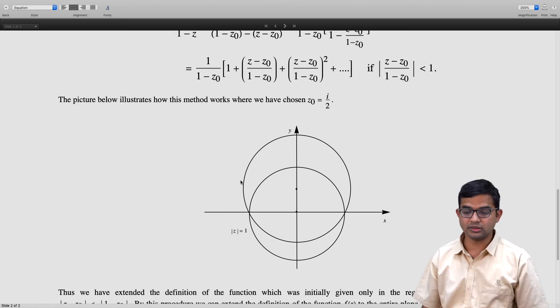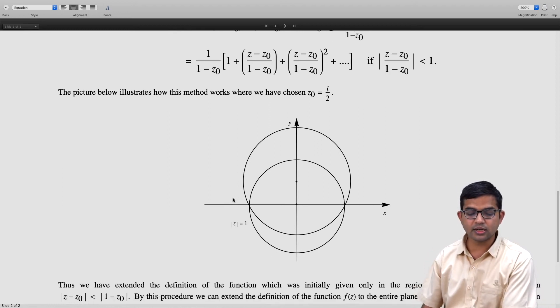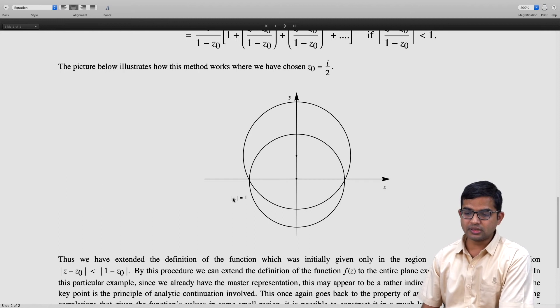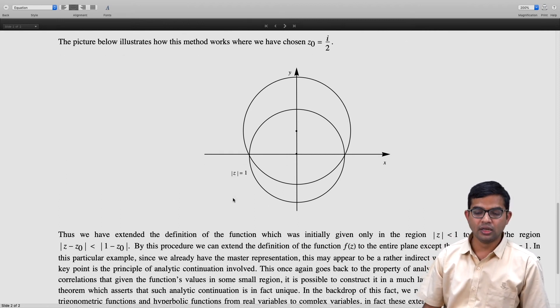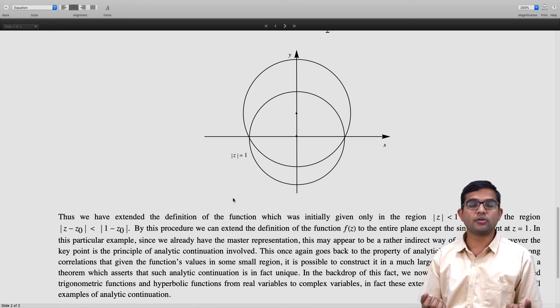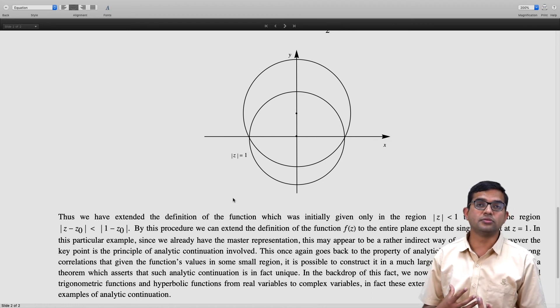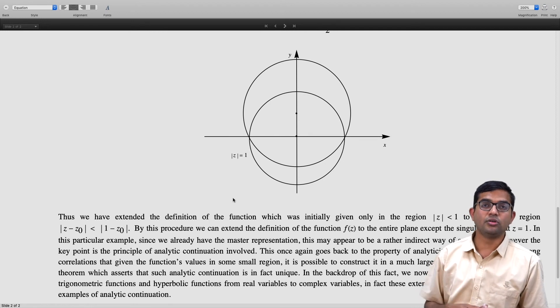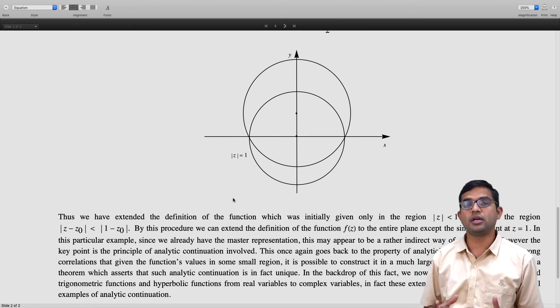This turns out to be quite a general result. In fact, this is something we have already done when we generalized the idea of sine of x. We started with sine of x as being defined only for real values of x, and then we said can we come up with a function which can take complex arguments in such a way that sine of x and sine of z are the same whenever z becomes real, but the overall function that you have is analytic.